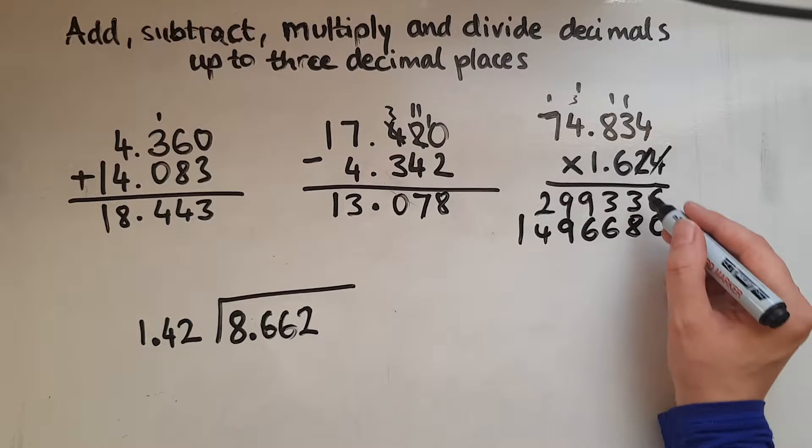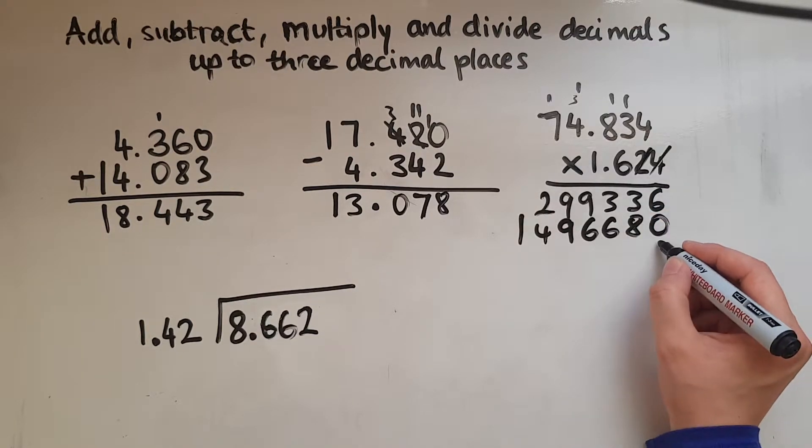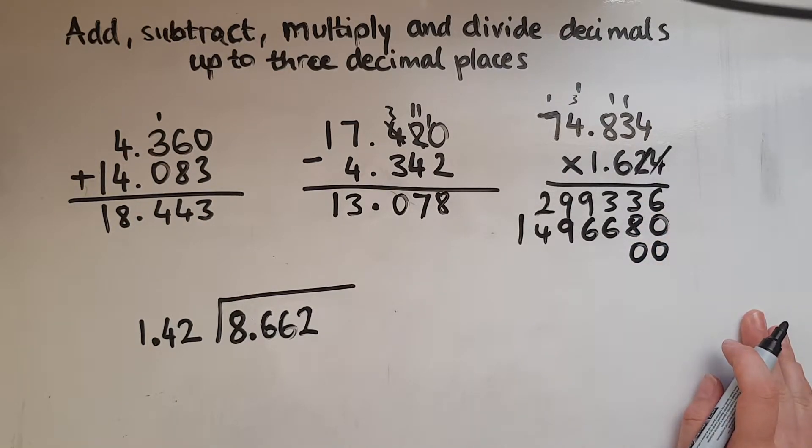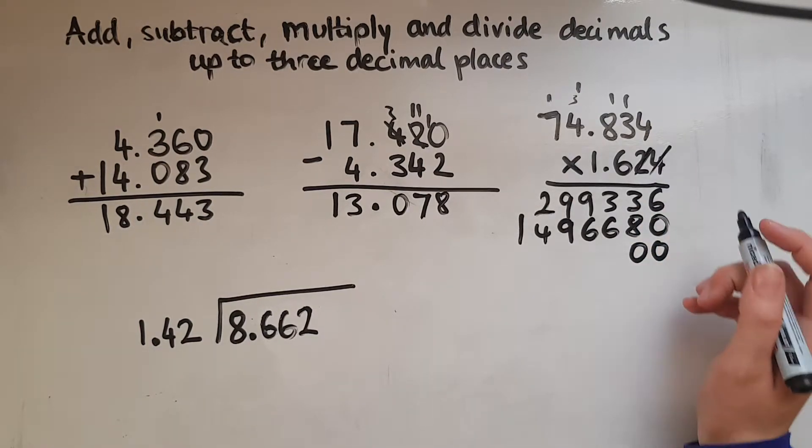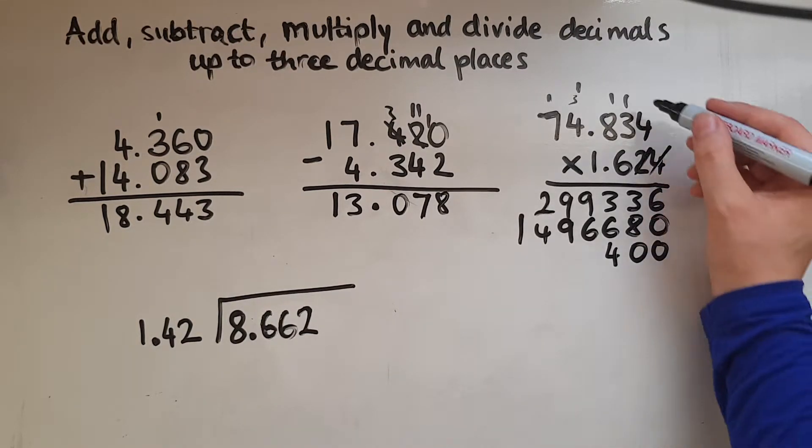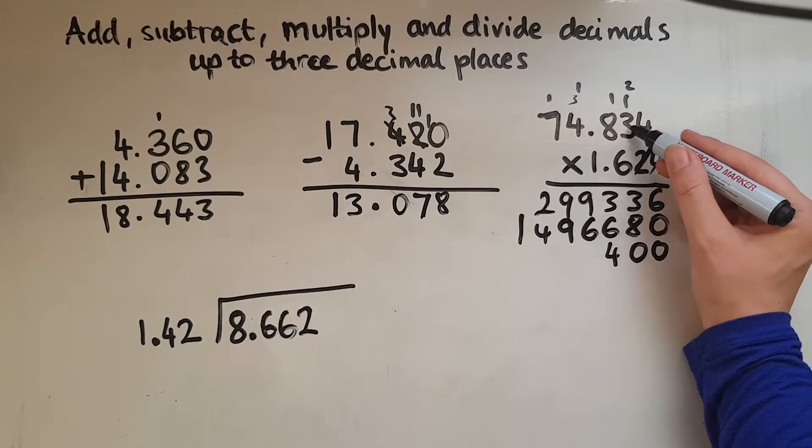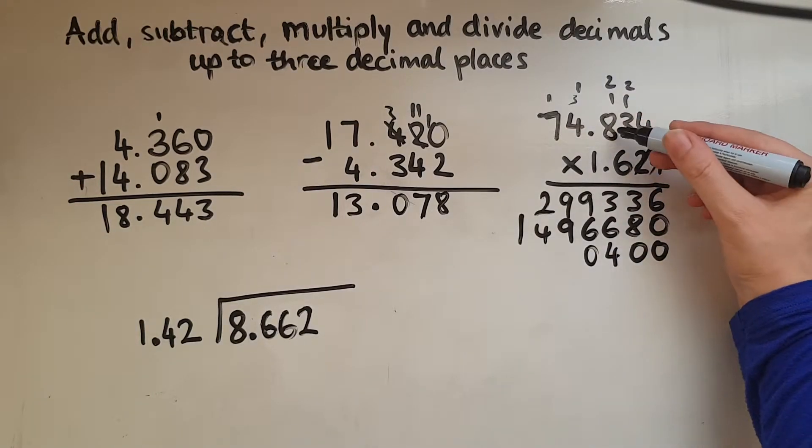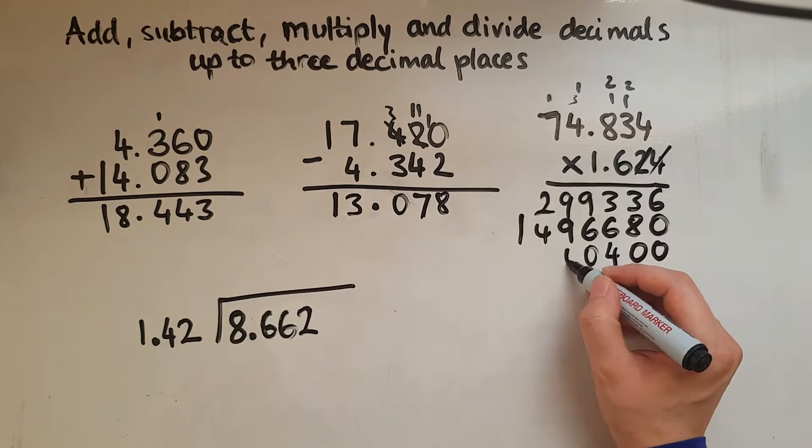So we've put now two zeros because there are two digits after the 6. So we've got 6 times 4 is 24. So 4 down and 2 carried over. 6 times 3 is 18, and the 2 is 20. 6 times 8 is 48, and the 2 is 50.